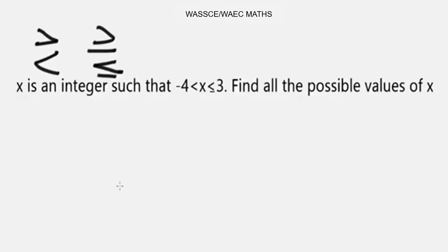Now, let's look at a typical example. We have to solve and represent our values on a number line. The problem says: x is an integer such that -4 < x ≤ 3. Find all the possible values of x.